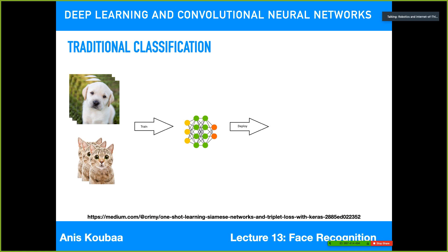What is the problem with traditional classification? The current process is that, for example, to classify dogs and cats, we need thousands of images of dogs and thousands of images of cats. We train a neural network and deploy it. This classical approach can work in most scenarios, but probably doesn't work in some others.